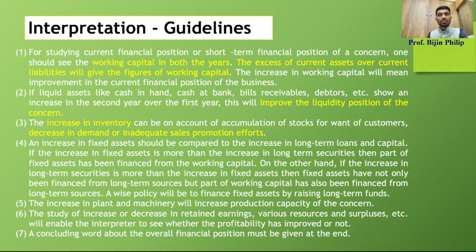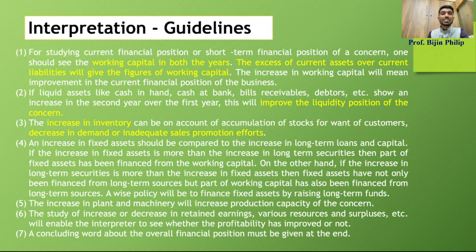I have listed out some of the items you have to focus on for giving a proper interpretation for the comparative balance sheet. The first item is current assets and current liabilities for the current year and the previous year. Looking at these, you can calculate the working capital, and based on that we can give a proper comment on the short-term financial position of the organization — whether working capital has increased or decreased compared to the previous year.